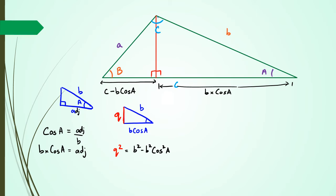Remember that when you're doing Pythagoras, if you want to find a missing side, it can be written as hypotenuse squared minus the other side squared. So I'm going to leave that as Q squared. Now looking at the left-hand side triangle, one of the sides is C minus B cos A, and the height of this triangle is Q, which is the square root of B squared minus B squared cos squared A.